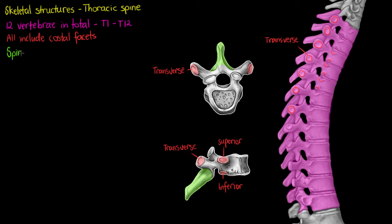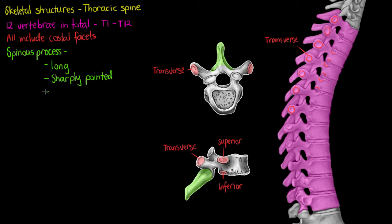The segment I've just highlighted here in green is our spinous process. The spinous process is one of the easier areas to look at and tell which part of the spine a vertebra comes from. The spinous process of our thoracic vertebrae will be long and sharply pointed, and it will also be sharply downward-facing. These spinous processes are an area where we have tendon and ligament attachment.